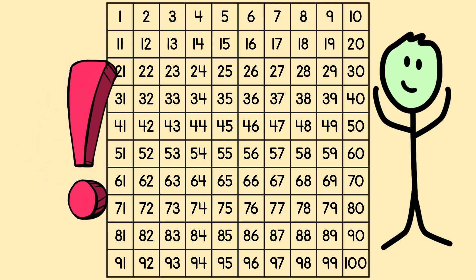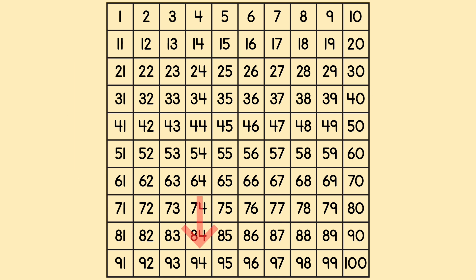Wait a minute, said Kelvin. I remember that when I add 10, I can drop down one block on the chart. And if I add 20, I would drop down two blocks. Maybe when I subtract 10, I could just go up a block rather than counting back 10.